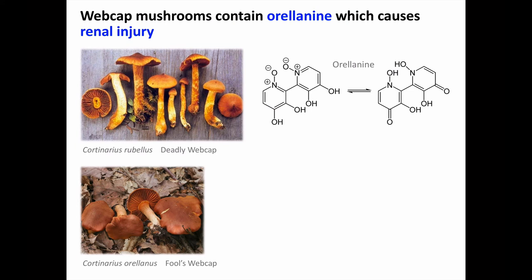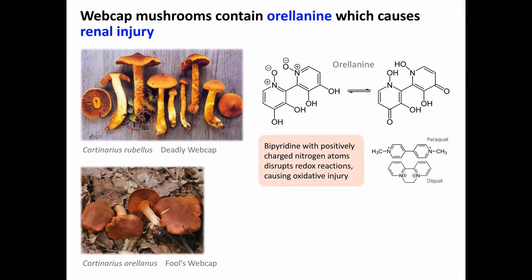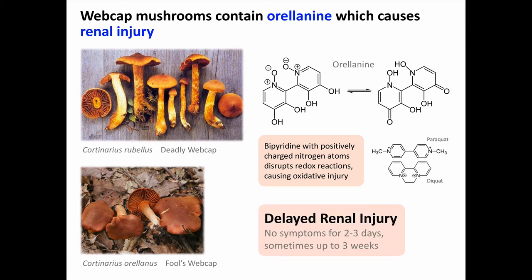Our next group are the webcap mushrooms — here we see deadly webcap and fool's webcap. These contain orellanine, which causes renal injury. Orellanine exists in two tautomeric forms, one of which is a bipyridine with two positively charged nitrogen atoms relatively close to one another. This chemical structure can disrupt cellular redox reactions, causing oxidative injury — exactly how the pesticides paraquat and diquat work. The brunt of the oxidative injury is to the kidneys, with a latent period of a few days up to a few weeks after ingestion.